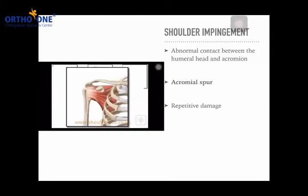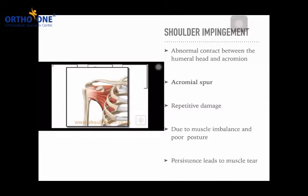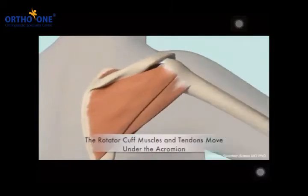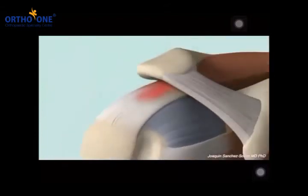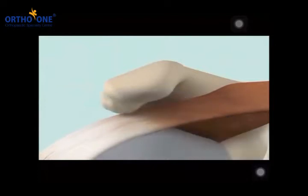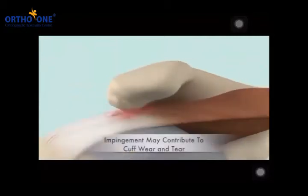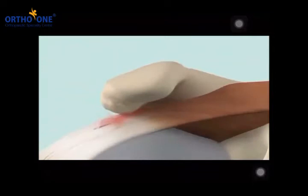Impingement causes repetitive damage and is mainly due to muscle imbalance and poor posture. An acromion spur is a small outgrowth of bone from the acromion that causes friction on the muscle, leading to pain and further muscle damage resulting in a tear. Whenever you try to lift your shoulder above 90 degrees, there is contact between the muscle and the undersurface of the acromion. When this subacromial space is reduced, movement above shoulder level causes a muscle tear.